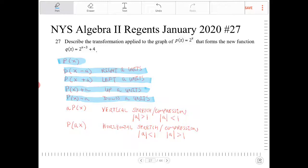If I multiply p(x) by a, that will cause a vertical stretch or compression. It will stretch when the absolute value of a is greater than 1.